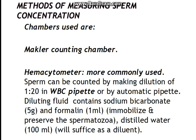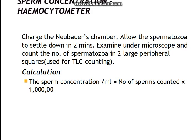To measure sperm concentration, chambers such as the Mackler counting chamber or the standard haemocytometer — the Neubauer chamber — are commonly used. We make a dilution of 1 to 20 in a WBC pipette or any automatic pipette. The diluting fluid contains sodium bicarbonate, formalin, and distilled water. We then charge the Neubauer chamber and allow the spermatozoa to settle for 2 minutes.